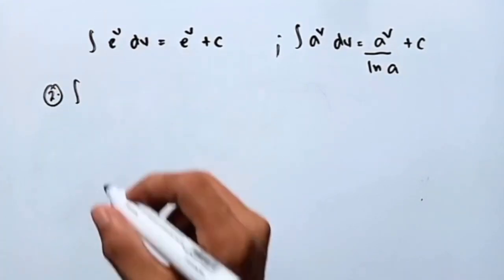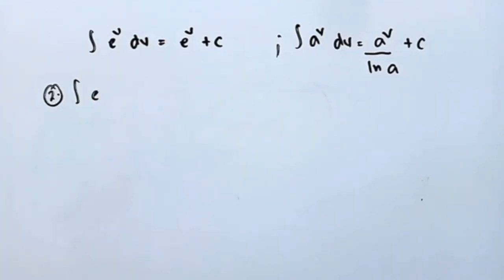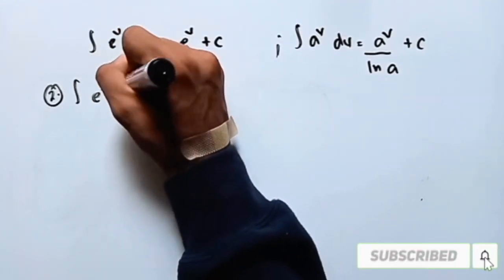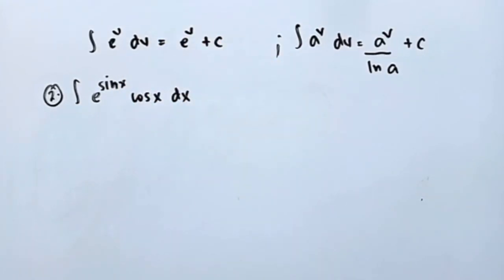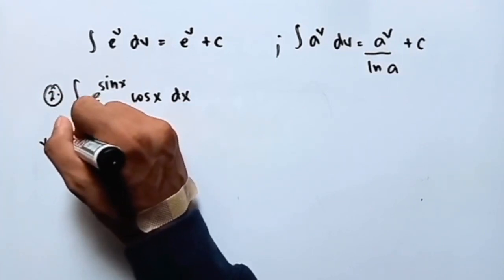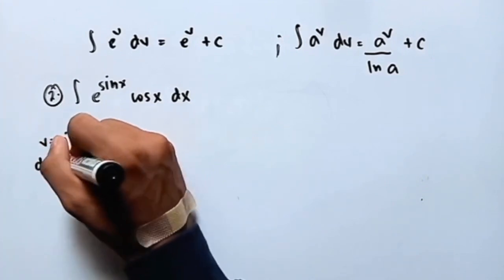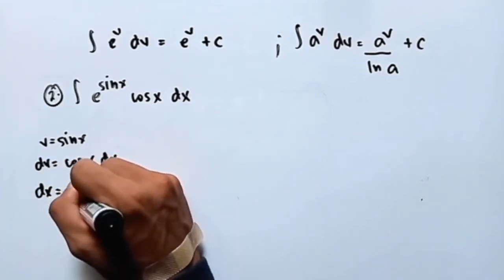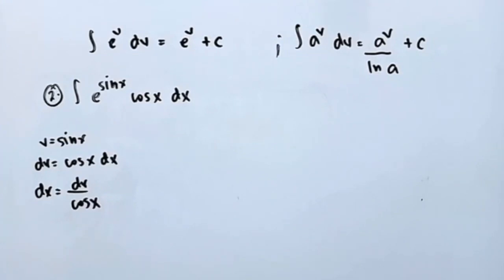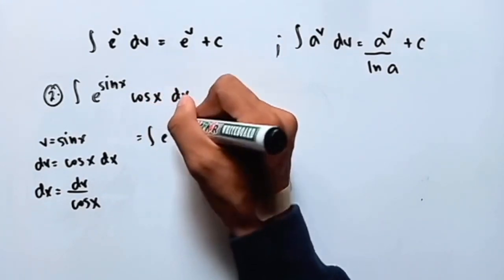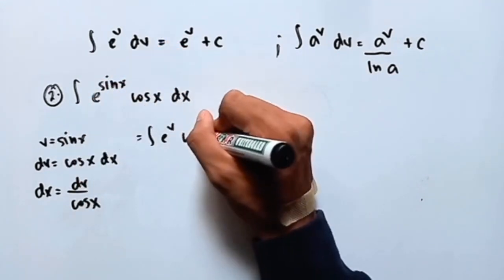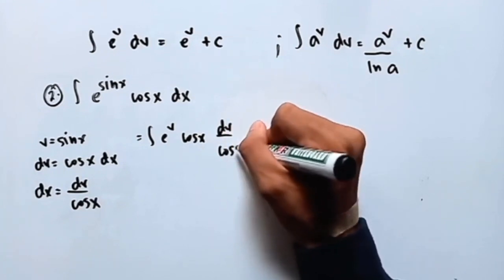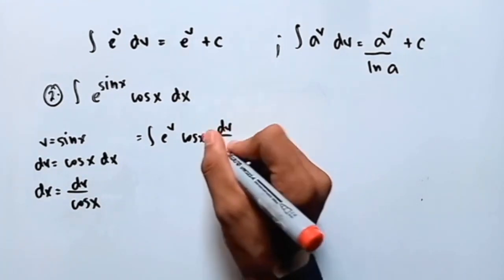Another example. We're going to integrate e raised to e raised to sin x times cos x dx. So v is equal to sin x, and dv is equal to cos x dx. So dx is equal to dv over cos x. Now let's input this value into the integral. The integral now will be equal to the integral of e raised to sin x, which is v, times cos x, times dx, which is dv over cos x.